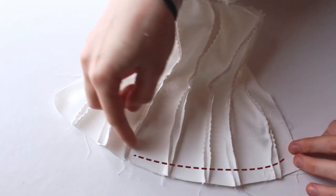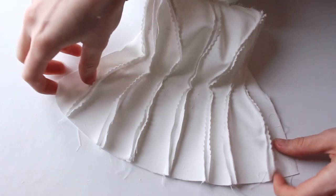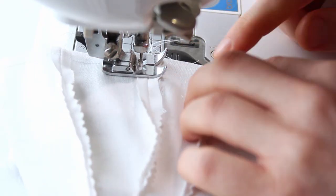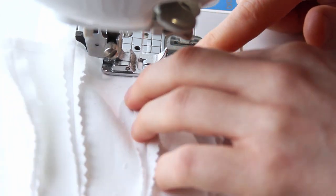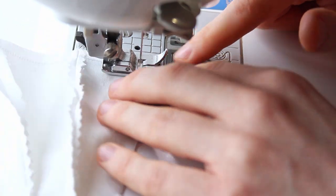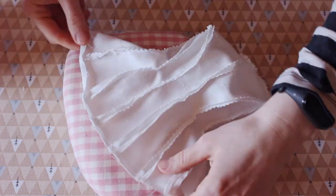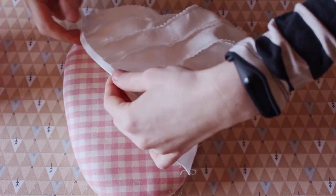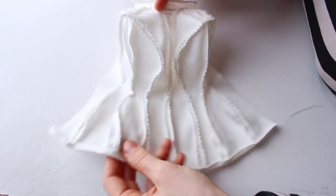You need to press down the seam allowance on the bottom. Make a guide for it by running a basting stitch along the bottom edge. Double check that all of the vertical seams are open when you do this. Using this stitch as a guide, turn the hem allowance toward the wrong side of the fabric and press.